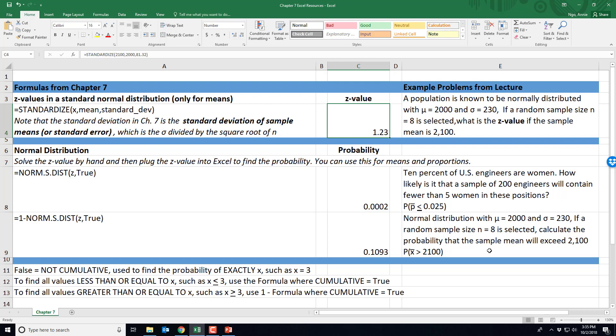So if you don't want to do it by hand for the z value of a mean, you can use this formula, but you have to remember that the standard deviation that you enter into the formula is the standard deviation divided by the square root of n.